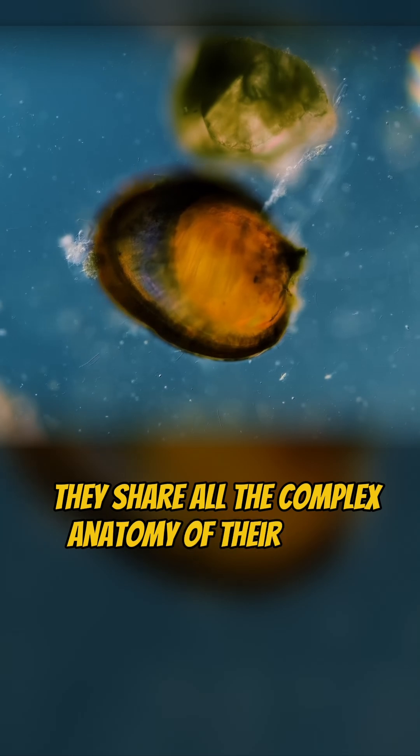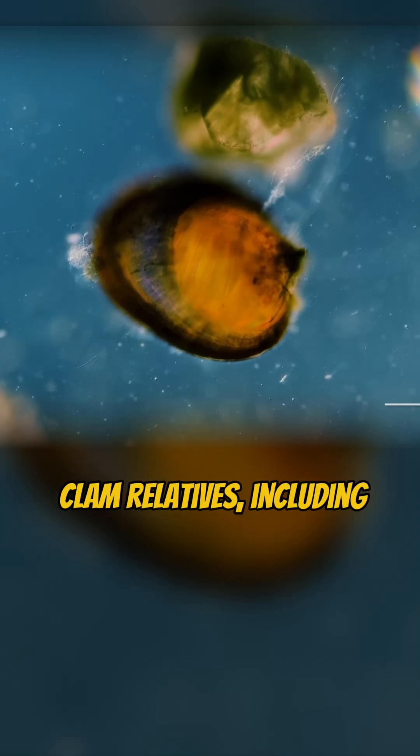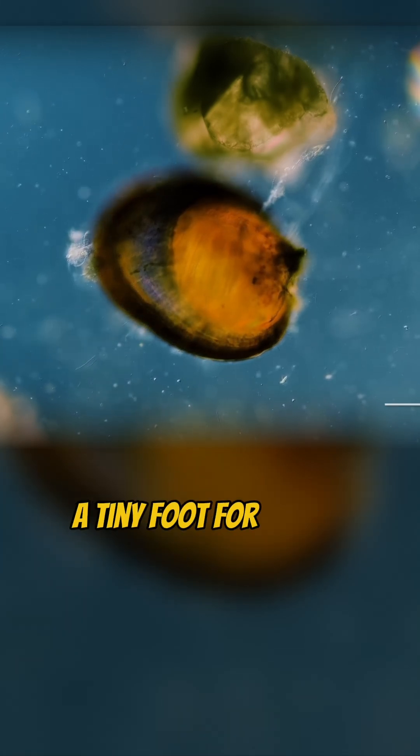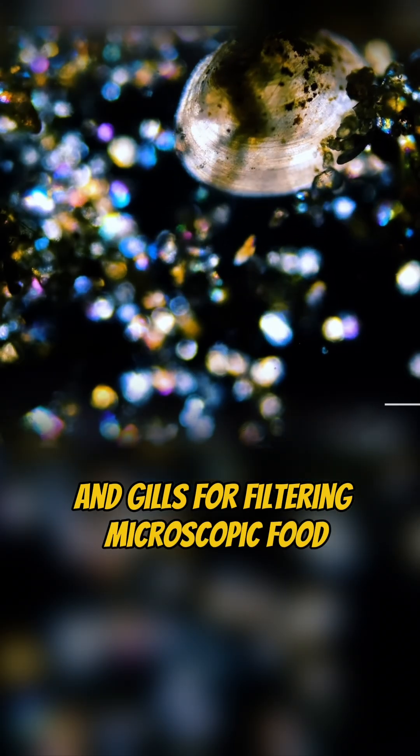Despite their size, they share all the complex anatomy of their larger clam relatives, including paired shells, a tiny foot for digging, and gills for filtering microscopic food.